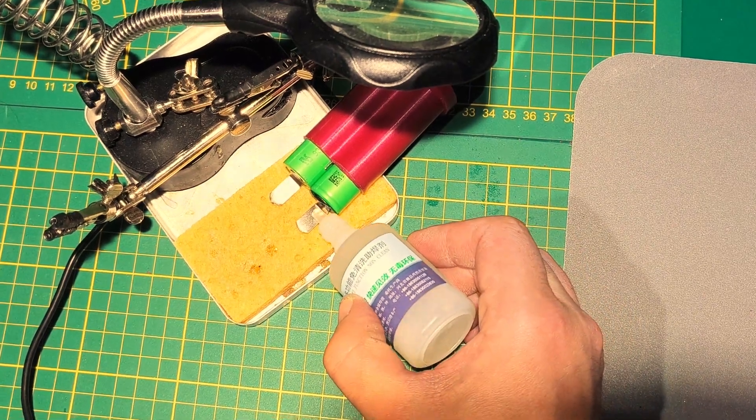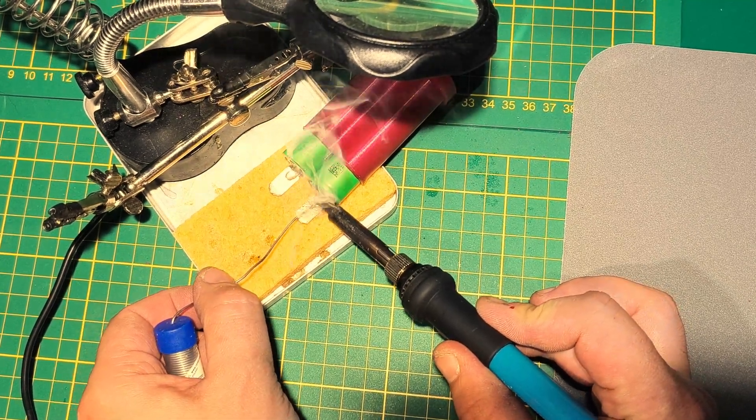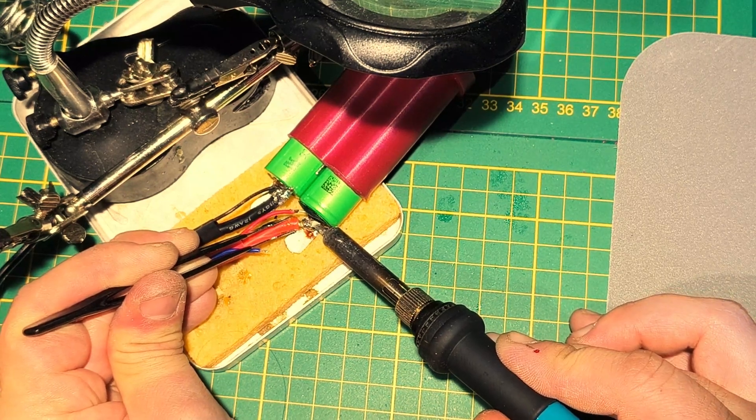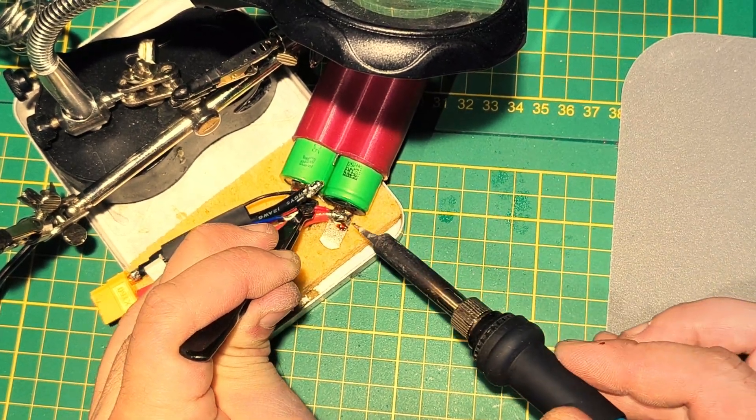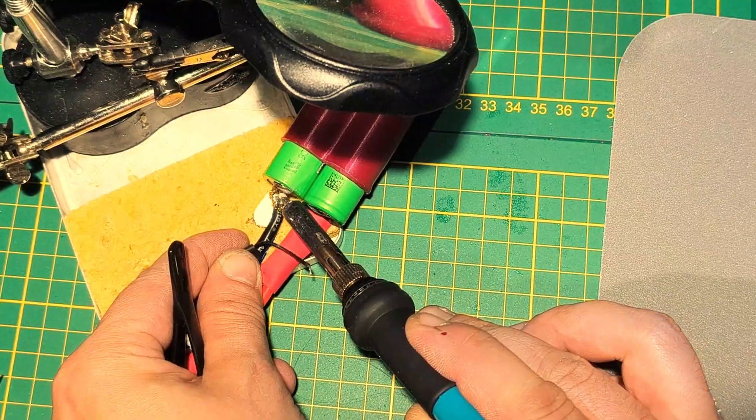Now it is necessary to create soldering points for the wires using solder acid. The terminals should be shorter, but I need longer ones for my project. I think that 5mm is enough to just hook up the wire.